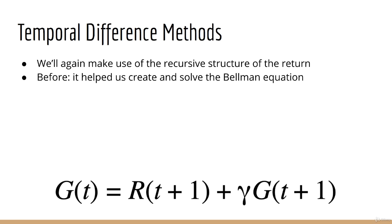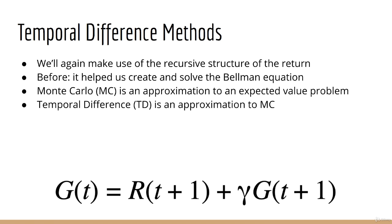One simple way to think about it is this. Monte Carlo methods were an approximation to an expected value problem. Temporal difference methods are simply an approximation to Monte Carlo. So in other words, they are an approximation of an approximation.